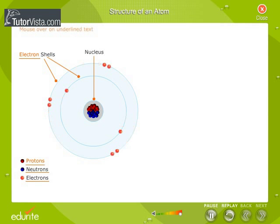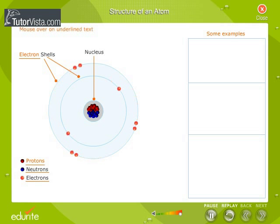Atoms of different elements are built up from different numbers of these fundamental particles. Shown here are a few examples. If an atom has one proton and one electron, it forms an atom of hydrogen.